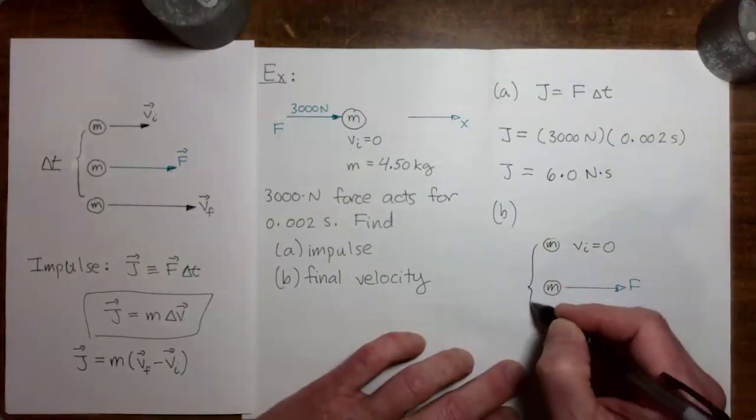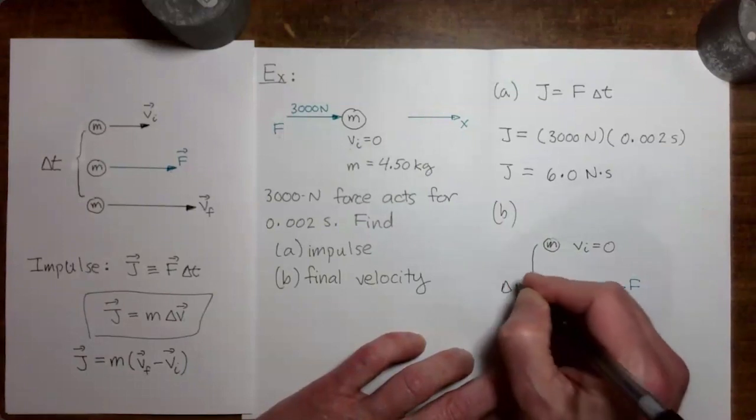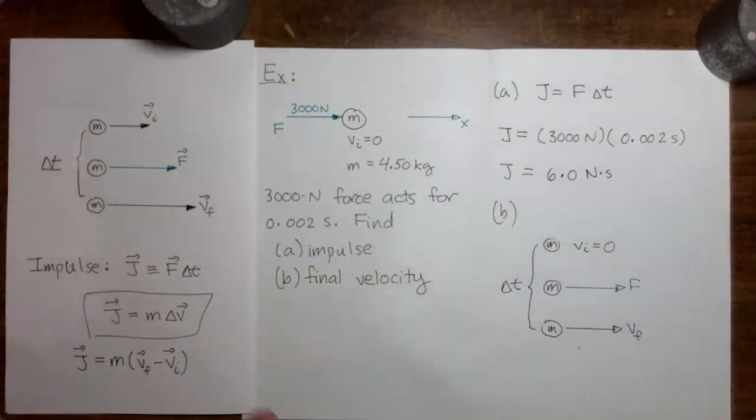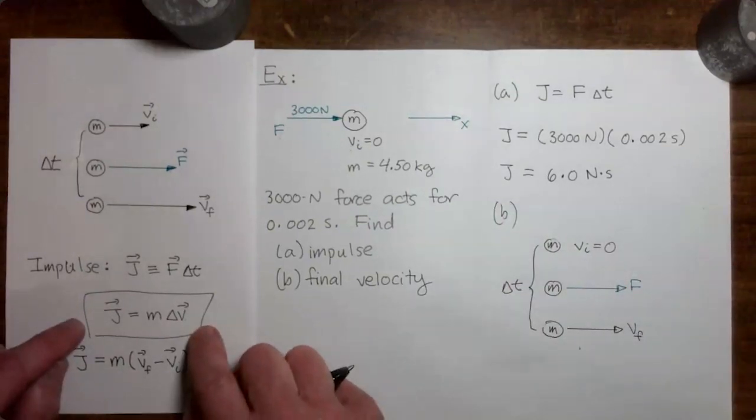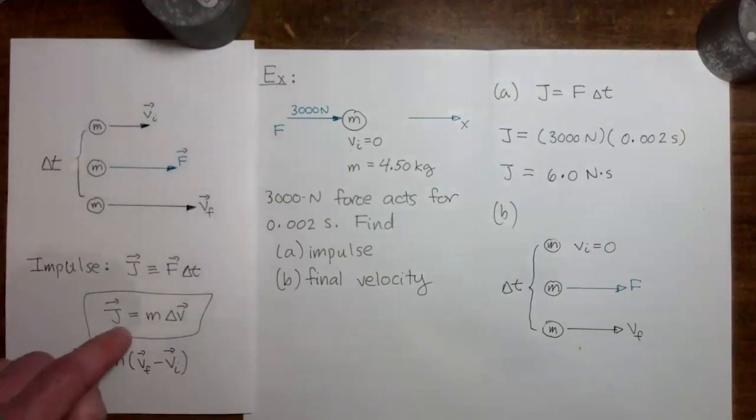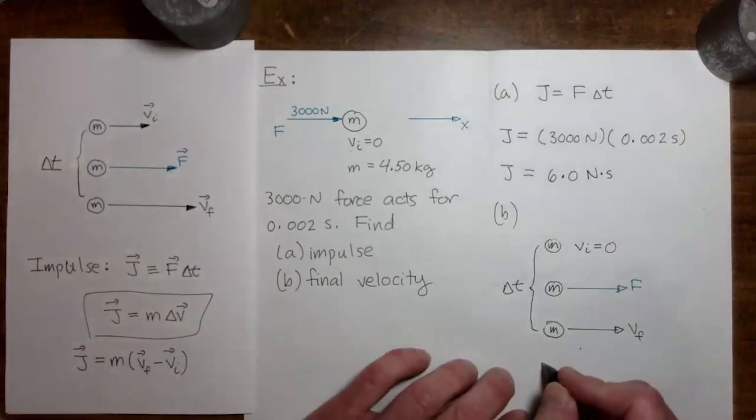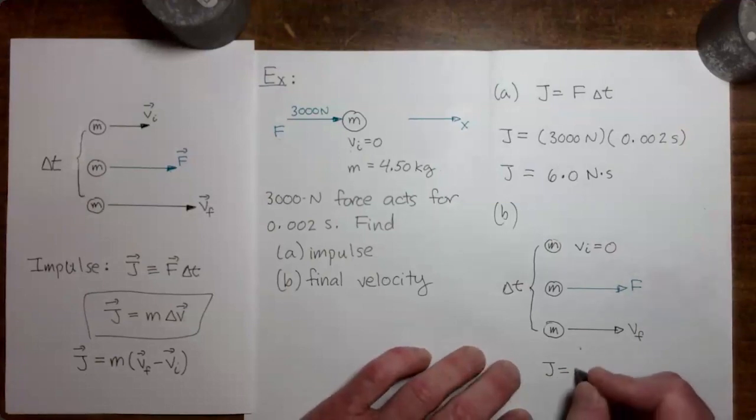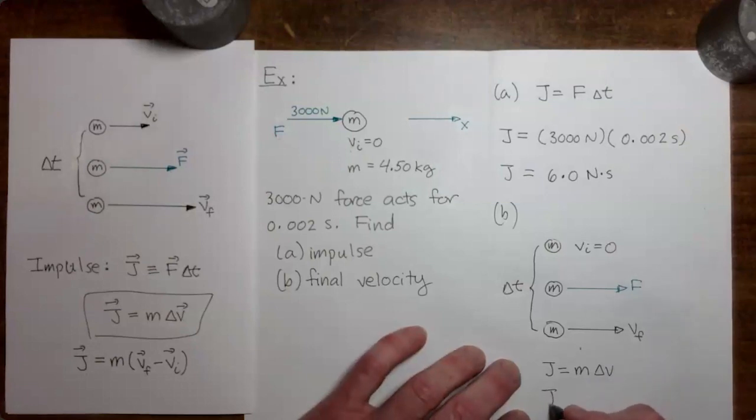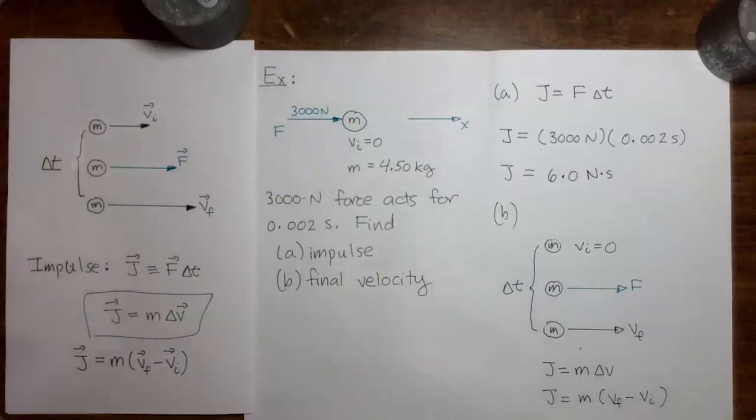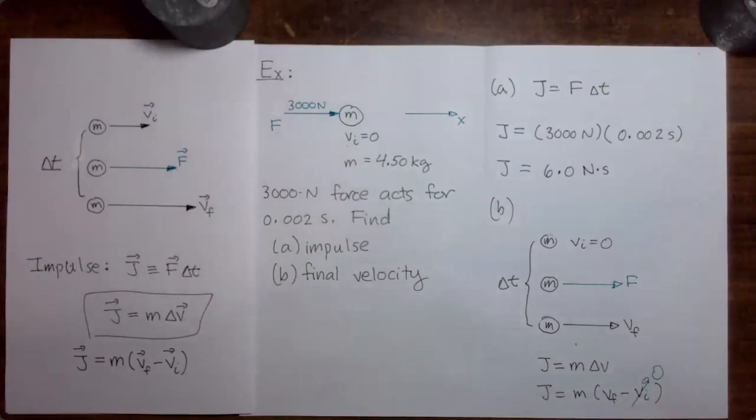And we say again that the force acted for a time delta t. So now let's copy over our result from the previous video. We have impulse equals mass times change in velocity. But here we are dropping the vector symbols. So it'll just be J equals m times delta v. And we will say then that the change in velocity is final velocity minus initial velocity. The initial velocity is zero.